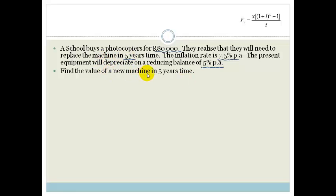It first says, find the value of a new machine in five years' time. So, let's think about this. We know that inflation rate is a compound interest because we learned that last year. So, A = P(1 + i)^n.